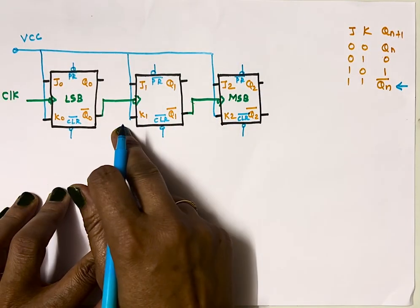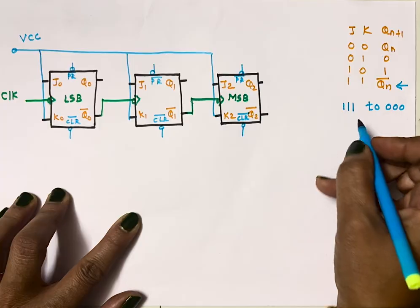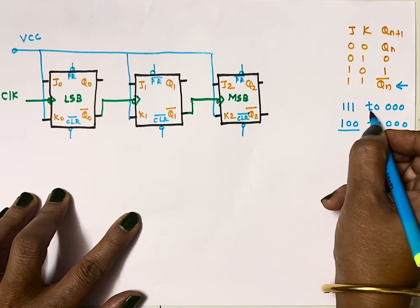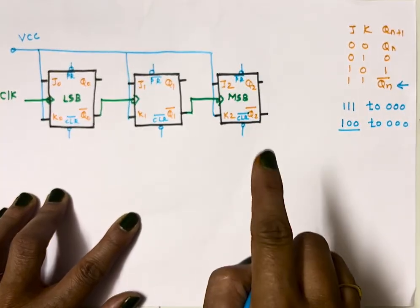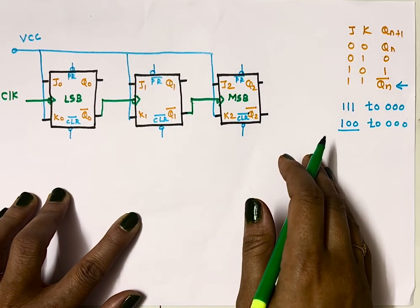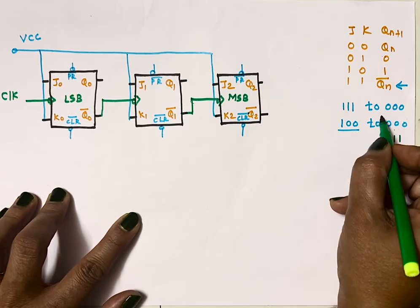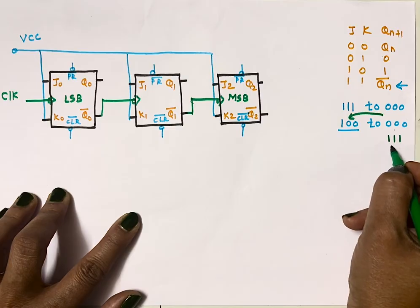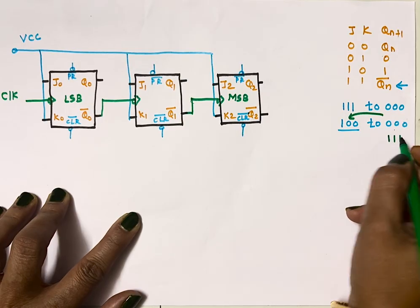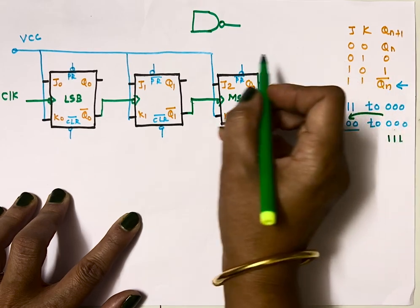This counter would naturally count from 111 down to 000, but we want it to count from 100 to 000. So we need to design logic that sets the output to 100 after 000. In natural down counting, after 000, 111 would come — but we want 100 to come instead. So when 111 tries to appear, it should reset. For 111, all outputs are 1, so we take all of them and connect them to the inputs of a NAND gate. In a NAND gate, when all inputs are 1, the output is 0.